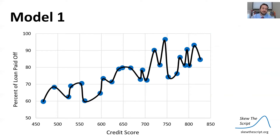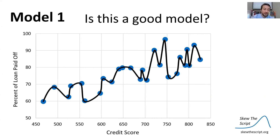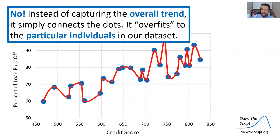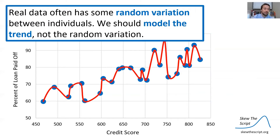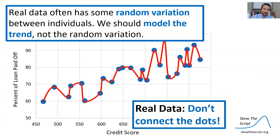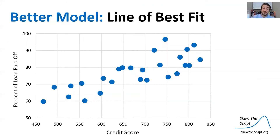Let's consider model one. We take our data and draw a line through all of the data points. Is this a good model? In fact, this is not a good model. Instead of capturing the overall trend, it just draws and connects the dots on our chart. It very much overfits the specific individuals in our data set. It's pretty bad for making predictions on new data since we're just connecting dots given the data we currently have. Real data will often have more random variation between individuals. We have to model the trend, not the exact random variation. When we have real data, don't just connect the dots.